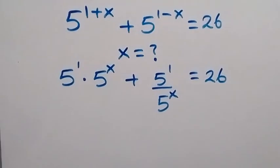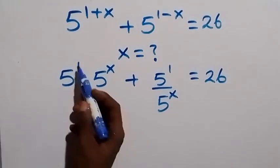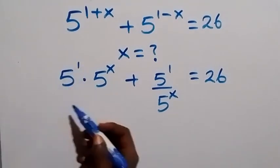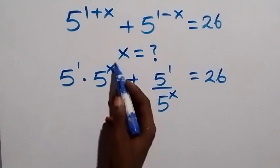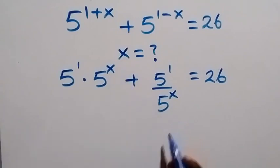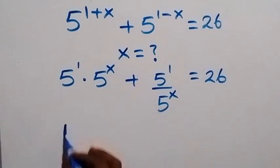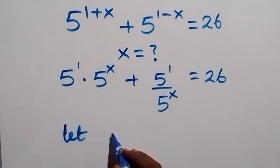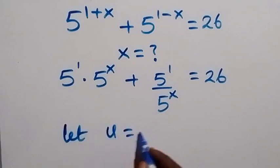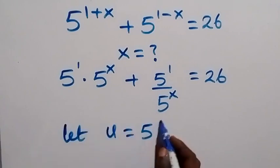From here, we have 5 raised to the power x — the same thing as 5. Then from here, we have 5 raised to the power x common. So, let a letter now — let's use the letter u to be equal to 5 raised to the power x.